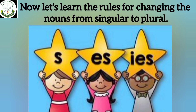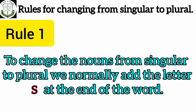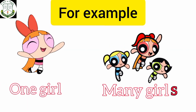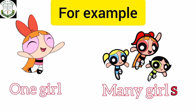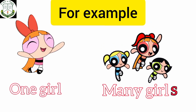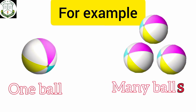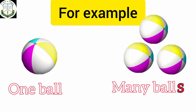Now children, let's learn the rules for changing the nouns from singular to plural. Rule number 1: to change the nouns from singular to plural, we normally add the letter S at the end of the word. For example, one girl — many girls. We write S to the word girl and so we get girls. One ball — many balls. We write the letter S to the word ball.